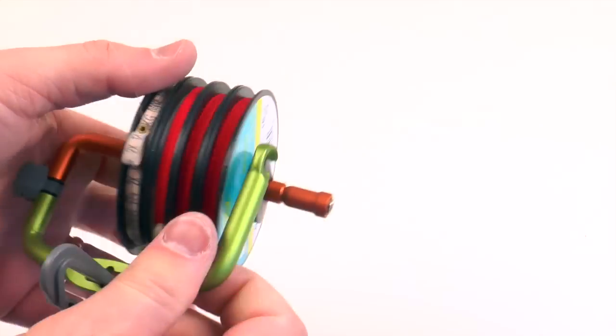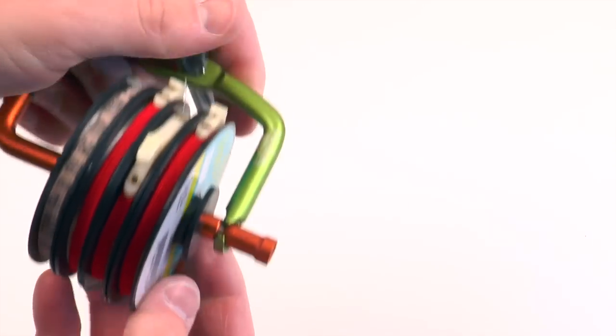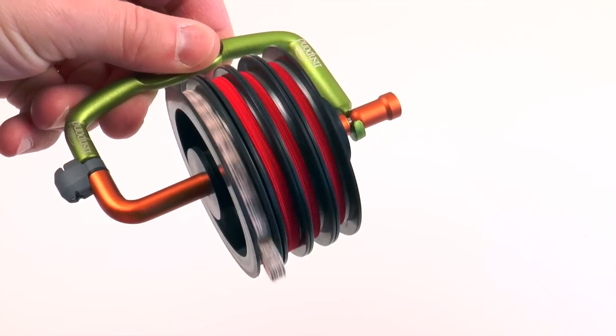Then to put it back together, you simply take your little spring-loaded end here, pull it, slide it back into place, and it's that simple. Then your tippet can spin freely.